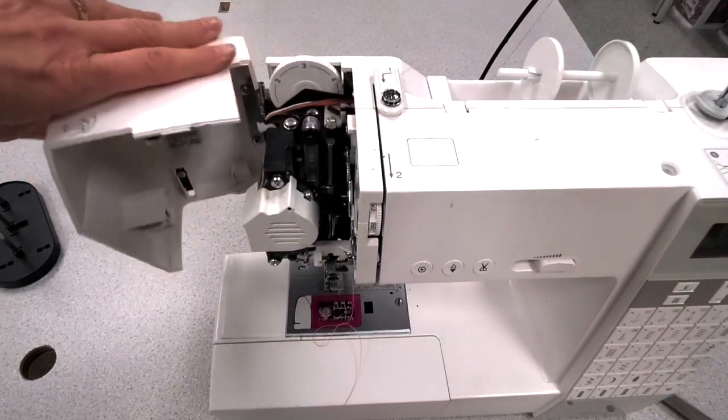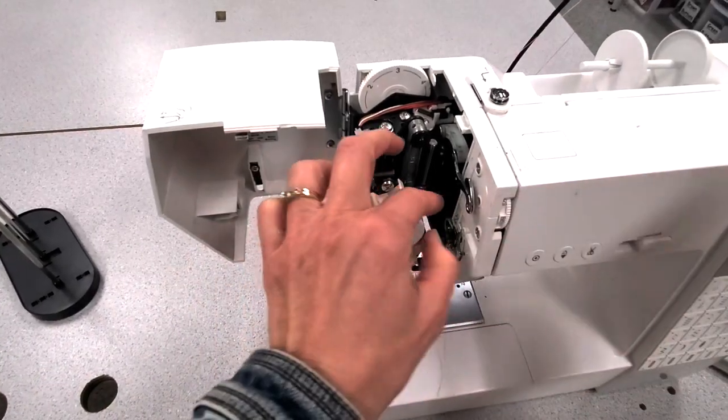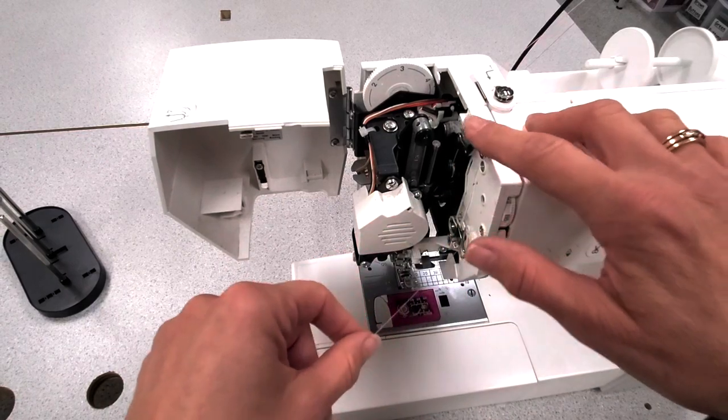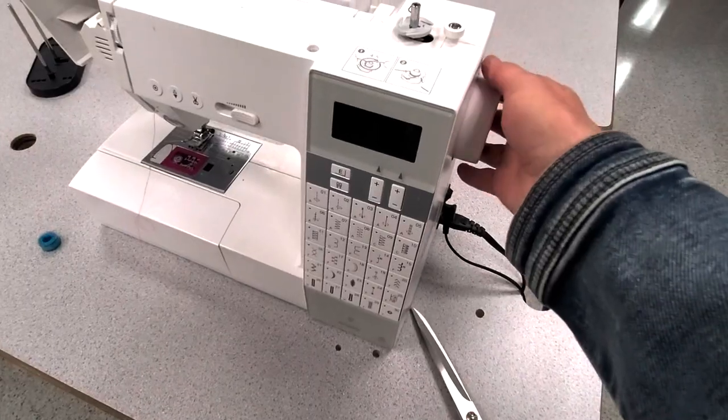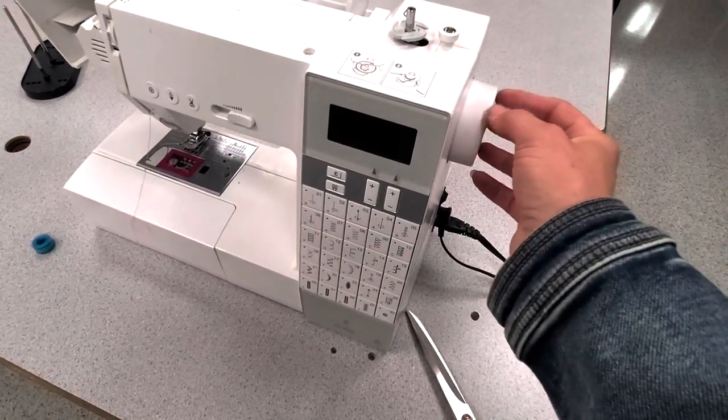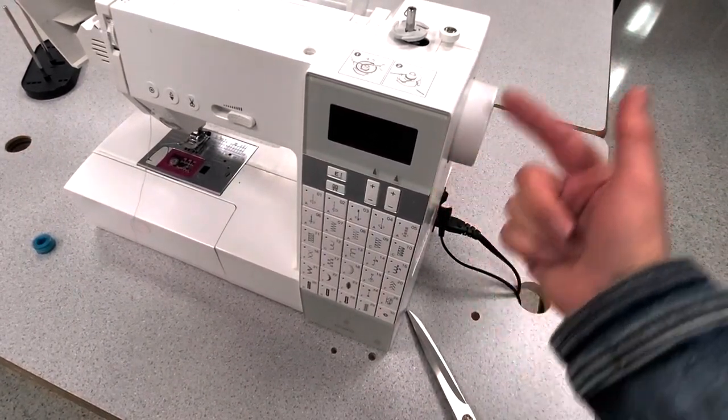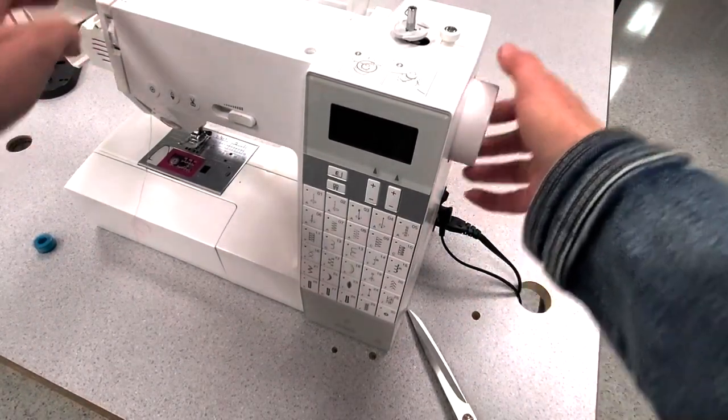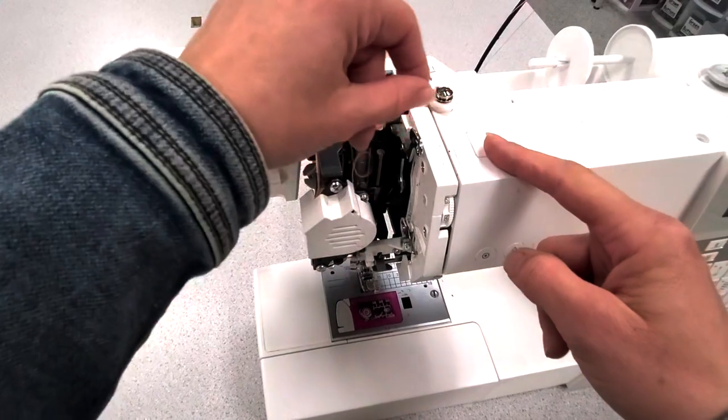You can open up the side of the machine here so that you can see right inside it. This is the thread uptake lever. Bring that silver hook right up to the top. If it's not at the top, you're going to turn this wheel towards you. This is the flywheel or hand wheel, and we only ever turn it towards you, not away. So to bring that silver hook up, you're going to turn it towards you all the way up to the top.